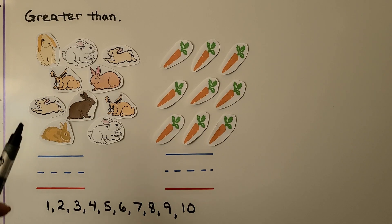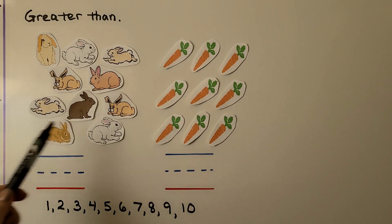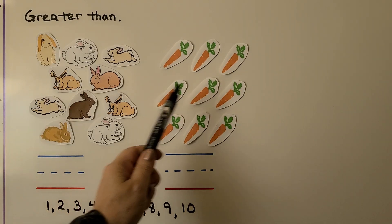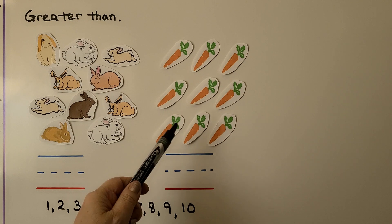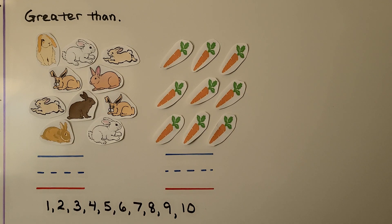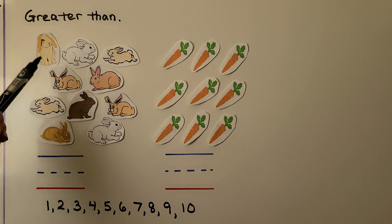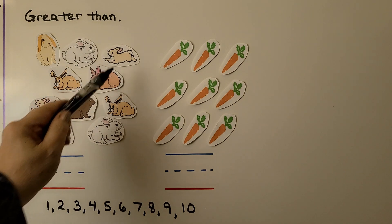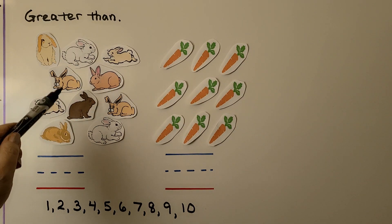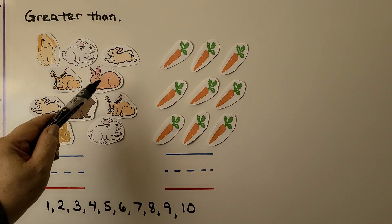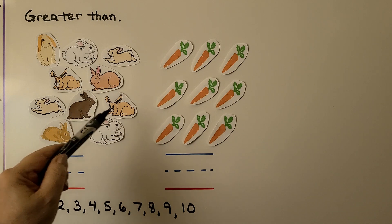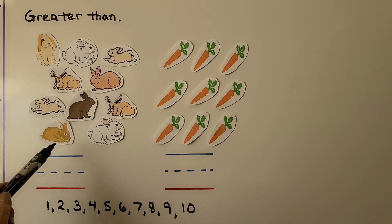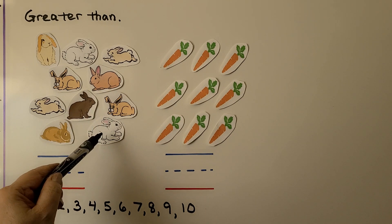Here we have a set of rabbits and here we have a set of carrots. We can count the rabbits: one, two, three, four, five, six, seven, eight, nine, ten.